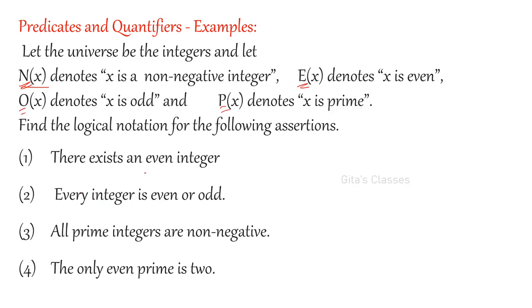Find the logical notations. First: there exists an even integer. Even integer is E(x). So the answer is: there exists x, E(x). Very simple.